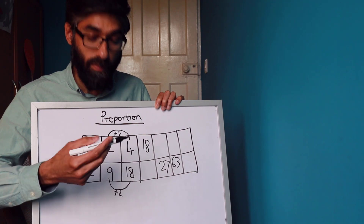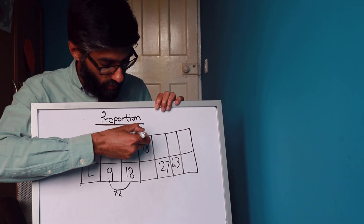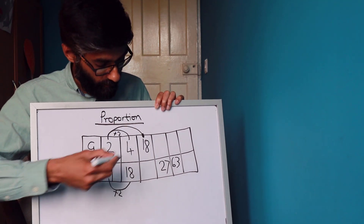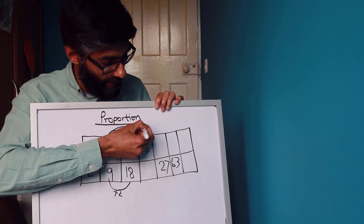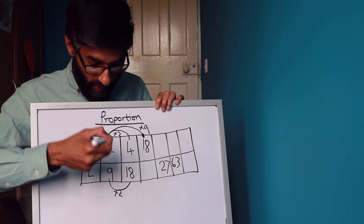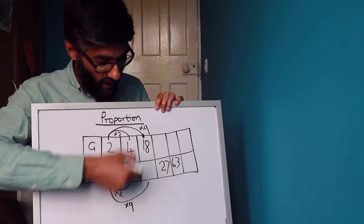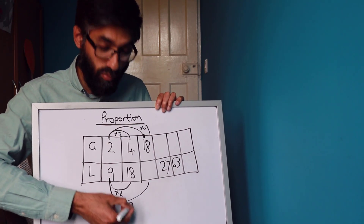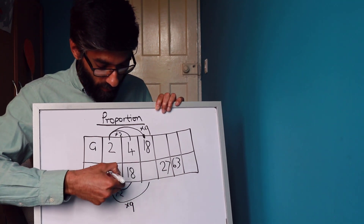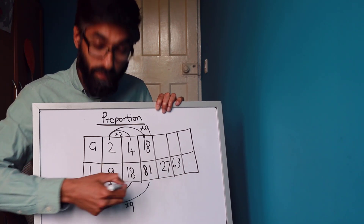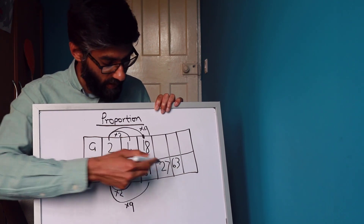For 18 gallons, we can't find a direct relationship from 4, so we go from 2 to 18. What do we do to 2 to get 18? Times it by nine. So we multiply the liters by nine as well: nine times nine is 81 liters.